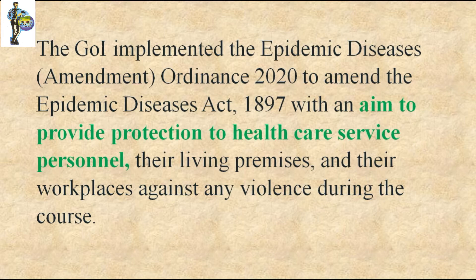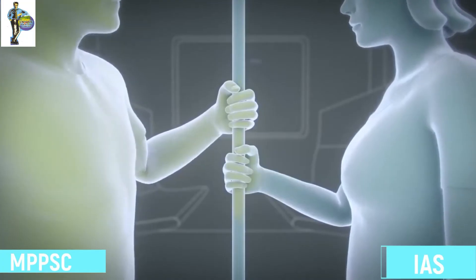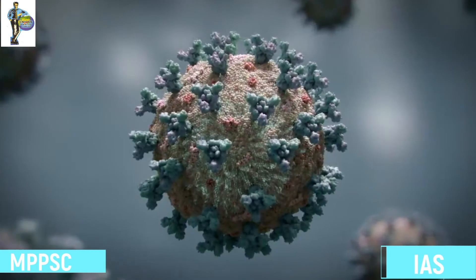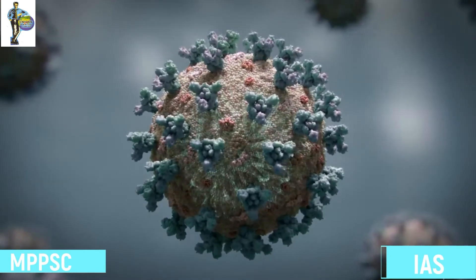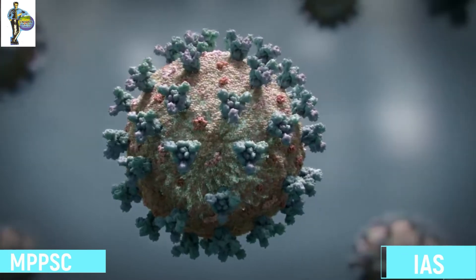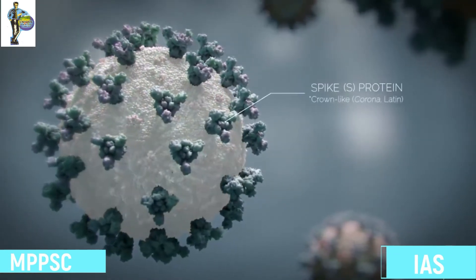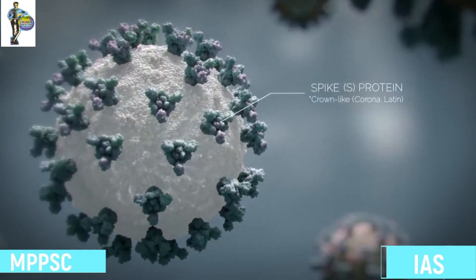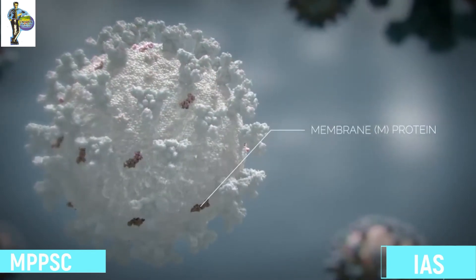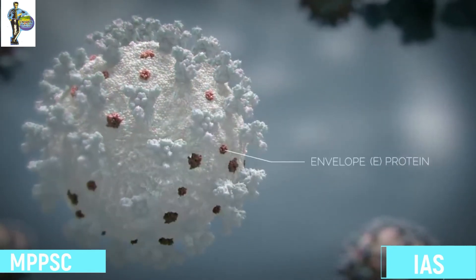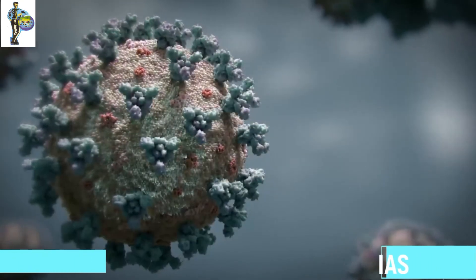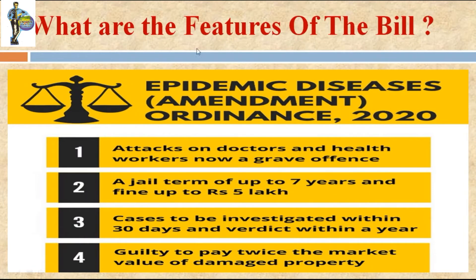The life of an ordinance is not measured from the date of its promulgation. The age of an ordinance is up to six weeks from the next session of Parliament after the ordinance's promulgation. So the ordinance that the government passed in the Epidemic Disease Act 2020 will now be converted into an act.